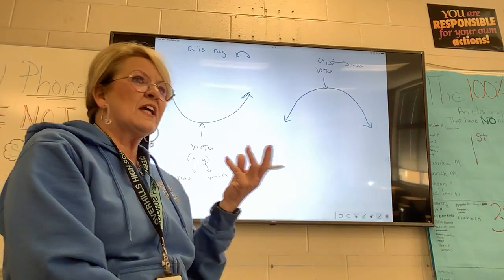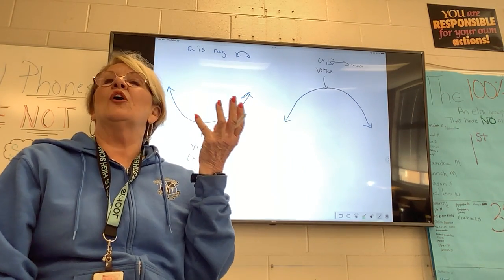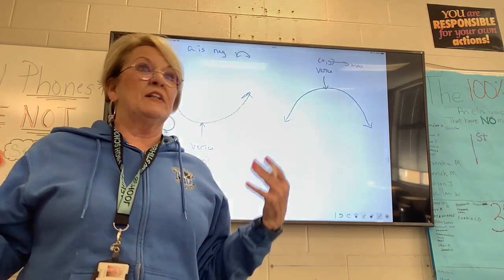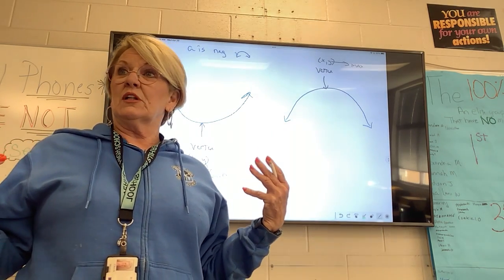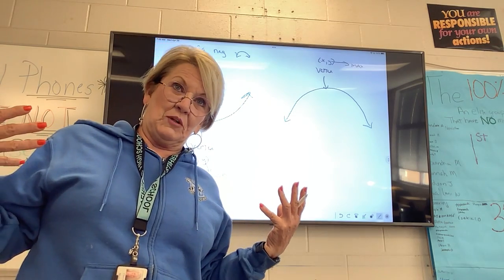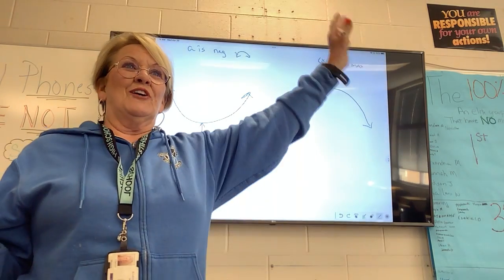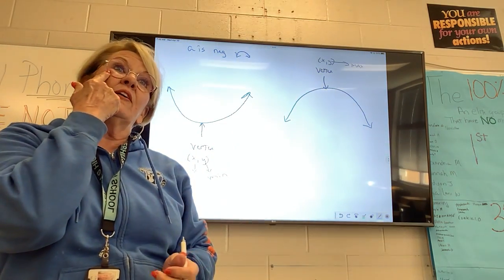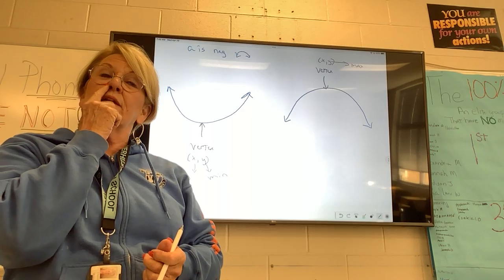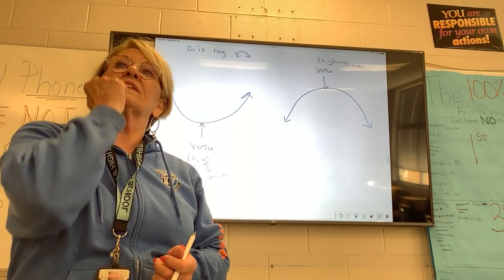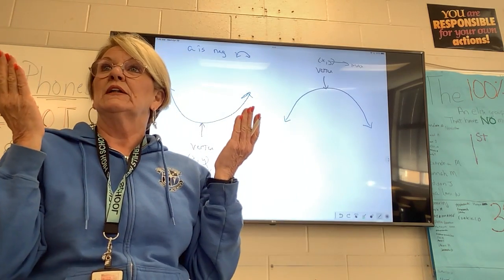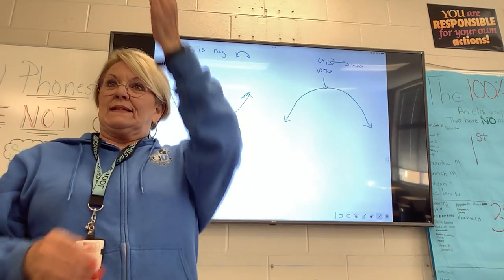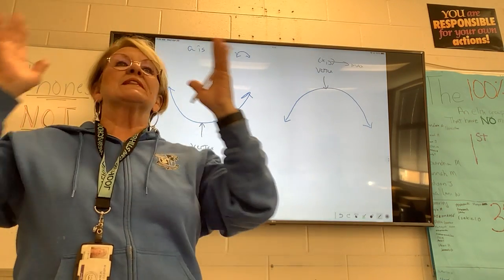Your vertex is an X and a Y. The X is the AOS — axis of symmetry. What does that mean? Do you know what symmetry means? Is our body symmetric? You've got an arm on the left and an arm on the right, a leg on the left and a leg on the right, an eye on the left and an eye on the right. Our body is symmetric. The AOS cuts something in half that makes it symmetric to each other. If my body had an AOS, it would be right down the center.